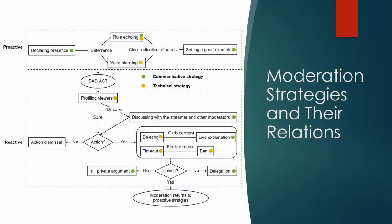We finally got this diagram to show each moderation strategy and how they are related. We identified four proactive strategies. The process began with monitoring without any intervention. If moderators feel the chat room could potentially go wrong, they would intervene and say something to deter potential violators. At the same time, moderators can keep posting rules and guidelines manually or through a bot in the chat. They will also activate the Twitch auto-mod to block toxic words. If necessary, they interact with viewers to set a good example so that other viewers can mirror their behavior.